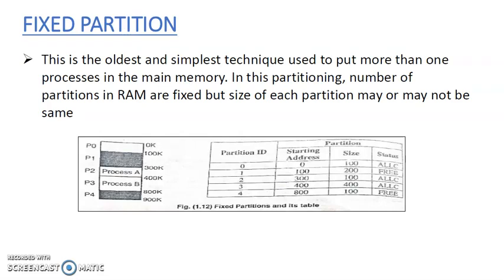What is the meaning of fixed partition? In this scheme, the partitions could be of different sizes. Once decided at the time of system generation, they could not be changed. This is the oldest and simplest technique used to put more than one process in the main memory. In partitioning, the number of partitions in the RAM are fixed, but the size of each partition may or may not be the same.